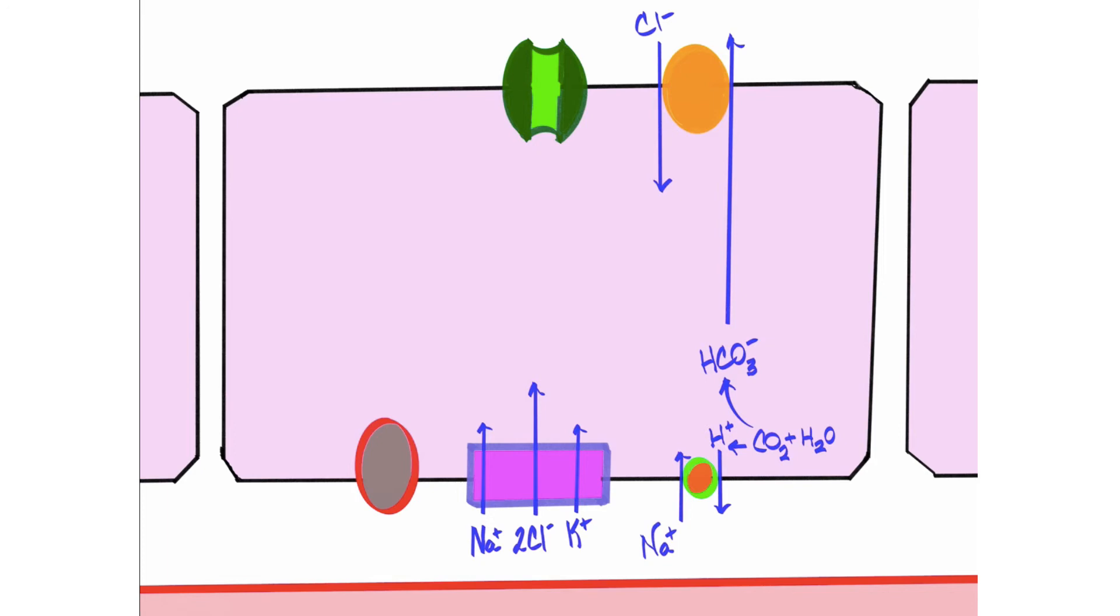Remember, the pH of the stomach can be as low as 0.8, and that is necessary for the conversion of pepsinogen into pepsin to help break down proteins. But we don't want those acidic juices in the duodenum. So by pumping in the bicarbonate into this lumen, that's going to help neutralize the lumen of the duodenum.